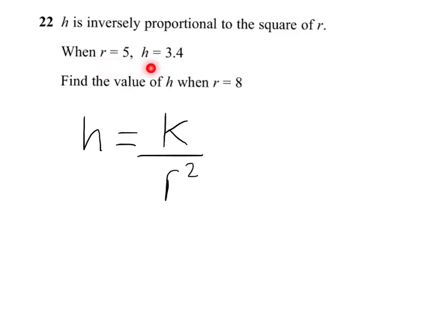With the information here, we can work out the value of k. So, when r is 5, h equals 3.4. So, that gives me 3.4 equals k over 25. So, 25 times 3.4 will give me k, which equals 85.